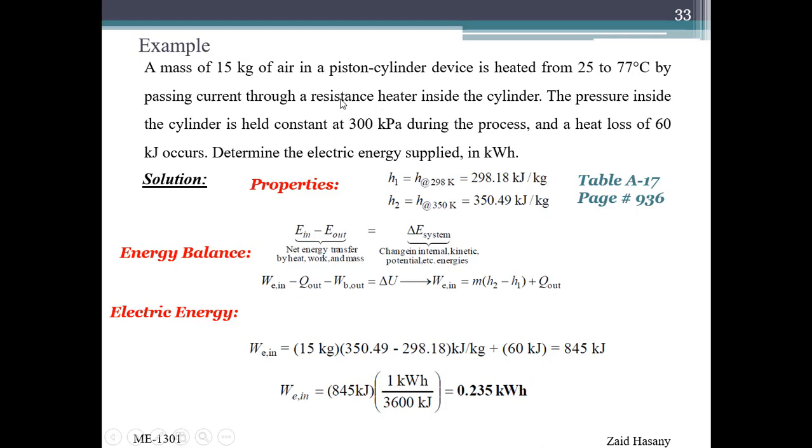The resistance heater is transferring energy into the cylinder which has 15 kg of air. The pressure inside the cylinder is held constant at 300 kPa during the process, and a heat loss of 60 kJ occurs. Determine the electric energy supplied in kWh. This is pretty simple. Here we have Table A-17 where you can find enthalpies of air.